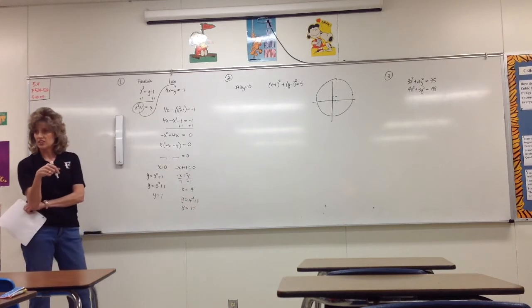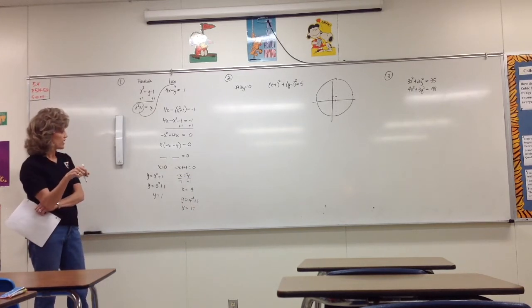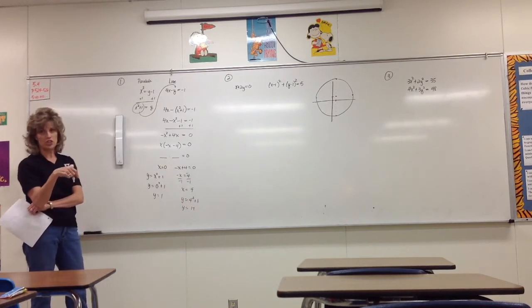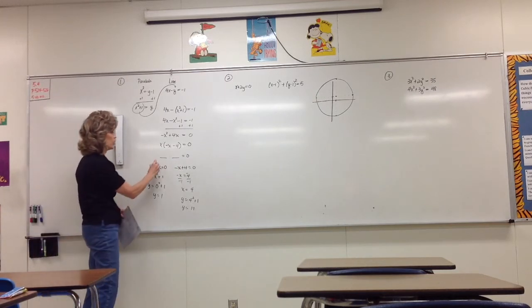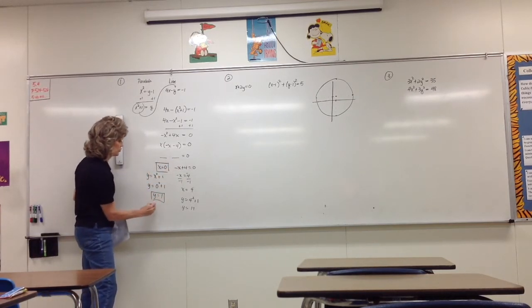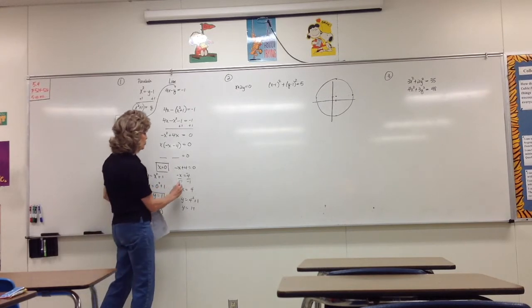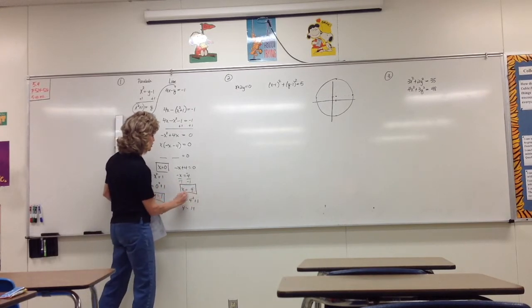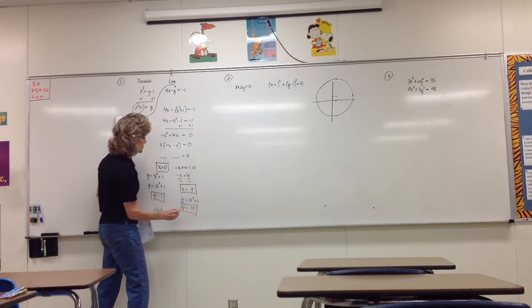When solving non-linear systems, I want you to always write all possible solutions as ordered pairs. So on this one, when x is zero, y is one — giving us (0, 1). And when x is four, y is 17 — giving us (4, 17).